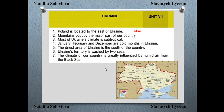'Mountains occupy the major part of the country.' The text says that only 5% of the territory of Ukraine is covered with mountains, so that is also false. 'Most of Ukraine's climate is subtropical.' Unfortunately, we don't live in a subtropical climate, so that is false as well.